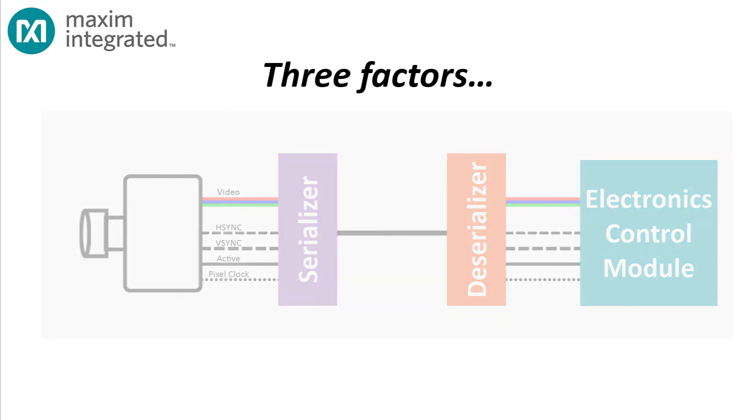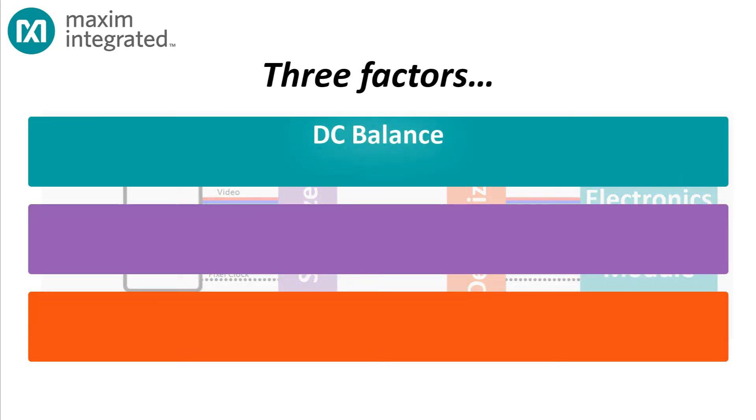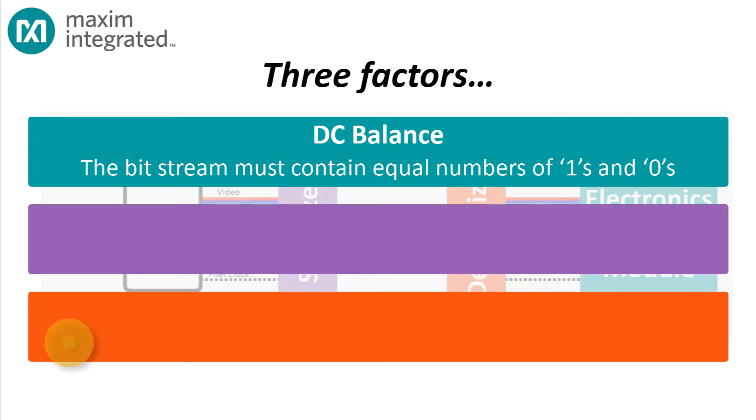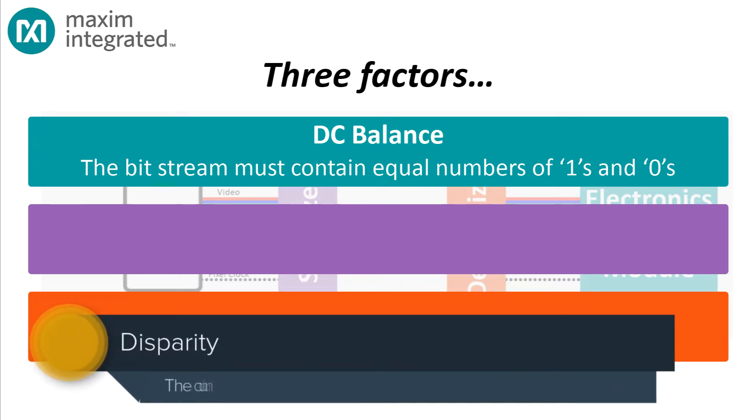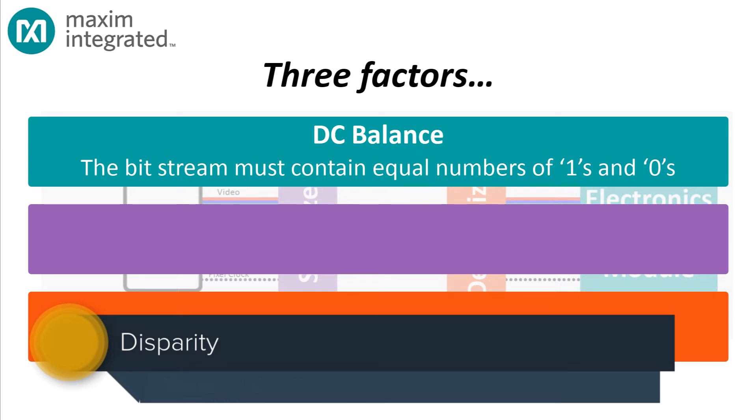There are three factors that we need to think about. First, DC balance. The signal that we put on the cable must contain no aggregate DC level, and we can achieve that by making sure the number of ones and zeros remains equal. The difference between the number of ones and zeros is called the disparity, and our goal is to keep the disparity at zero, and if it deviates from zero, to get it back to zero as quickly as possible.